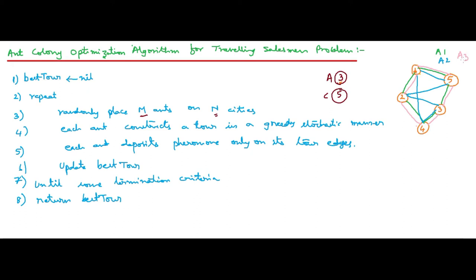Now we need to determine which route is the best. Before the first iteration we don't know the best tour, so best_tour is assigned nil. Then we randomly place the ants and let them wander. Each ant constructs a tour in a greedy stochastic manner — for example, ant A1 constructs a tour: city 1 → city 2 → city 4 → city 3 → city 5. Similarly, tours of A2 and A3 are also constructed.